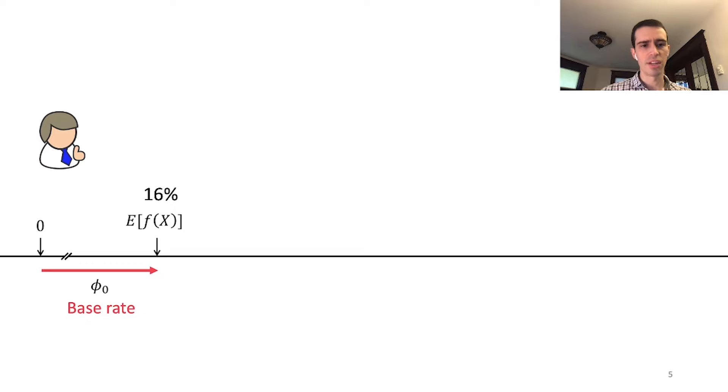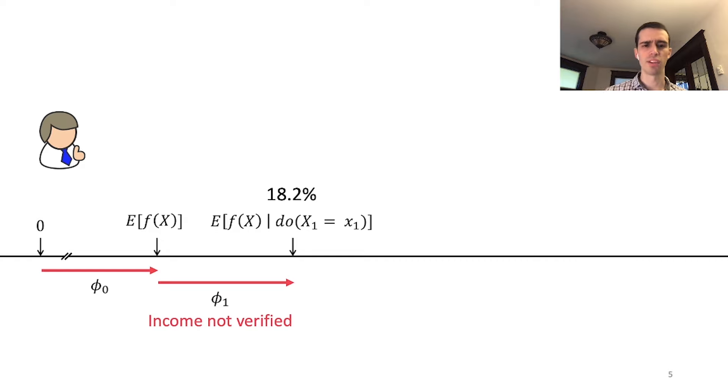We can look at the expectation of the model's prediction over our training dataset, then fill out John's application one field at a time. First, his income is not verified. This bumps up the expected value by 2.2%, which we can attribute to the fact that John didn't have his income verified. Relative to people in the training dataset, this increases his risk.